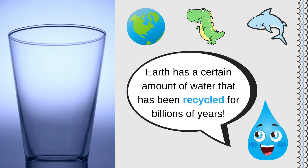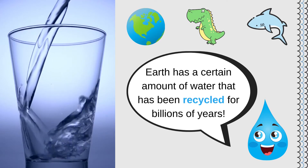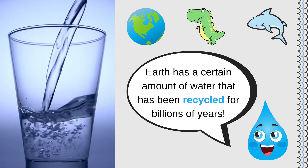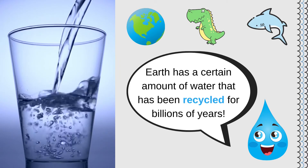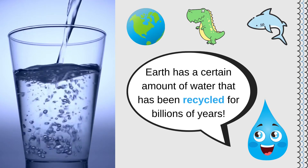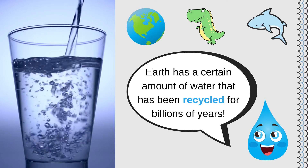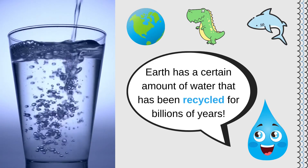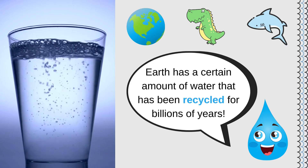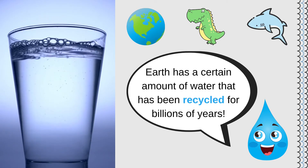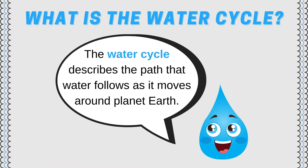Did you have a glass of water today? If you did, you drank water that is nearly as old as planet Earth itself. That same water was around when your parents were born and even when dinosaurs walked the earth. It may have even had a shark swimming through it hundreds of years ago. Earth has only a certain amount of water that has been used over and over again for billions of years. This recycling of water through time is controlled by the water cycle.